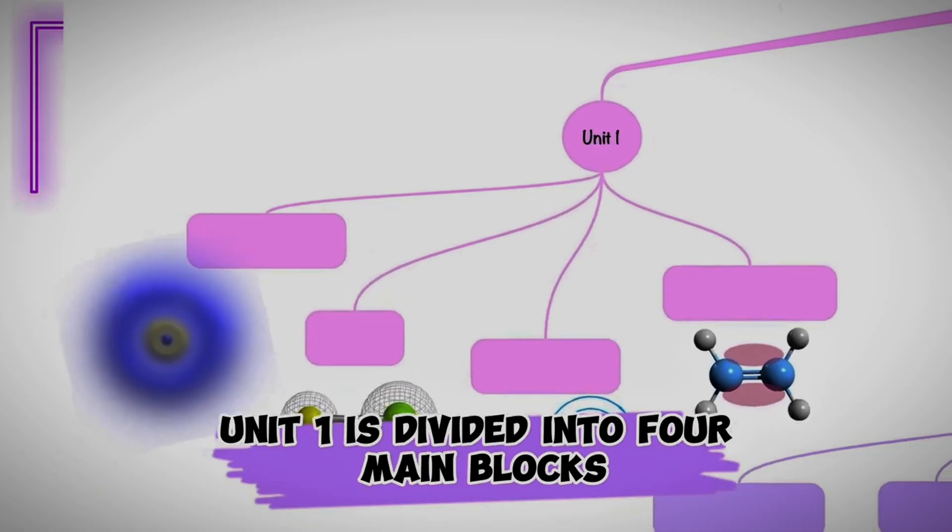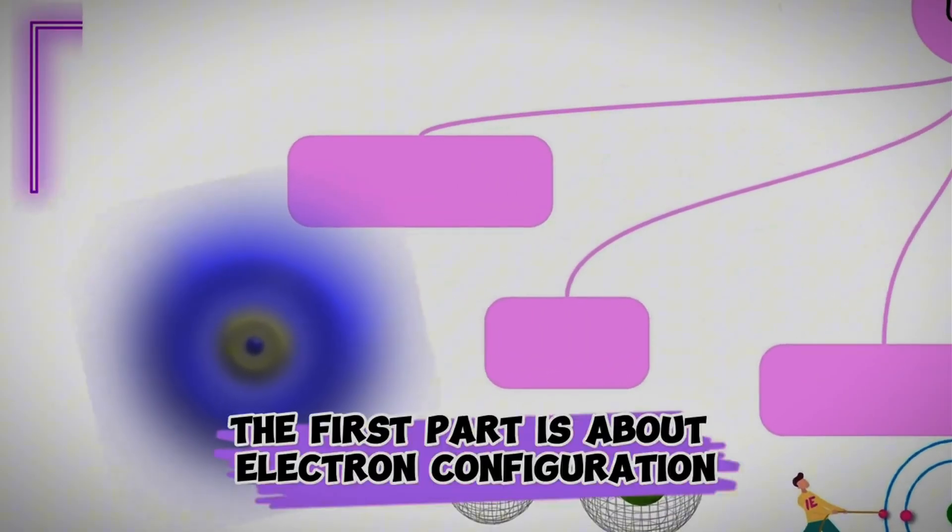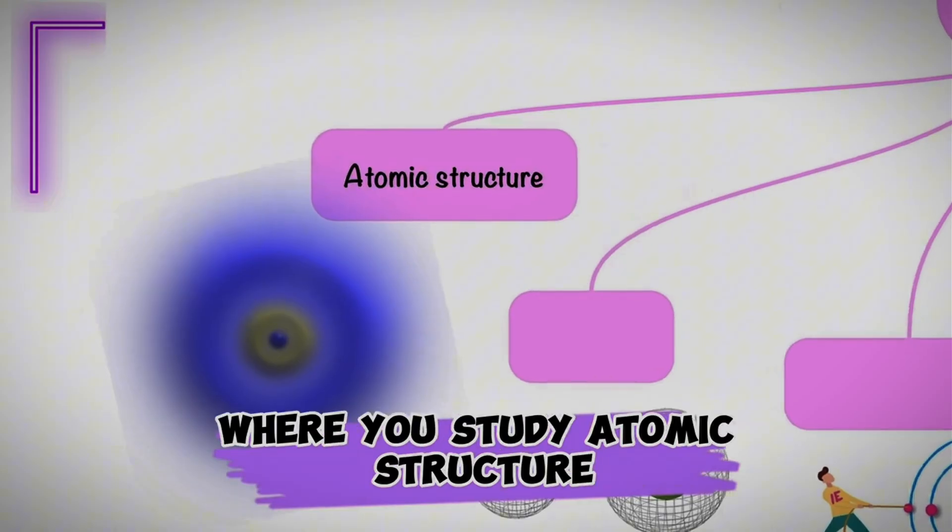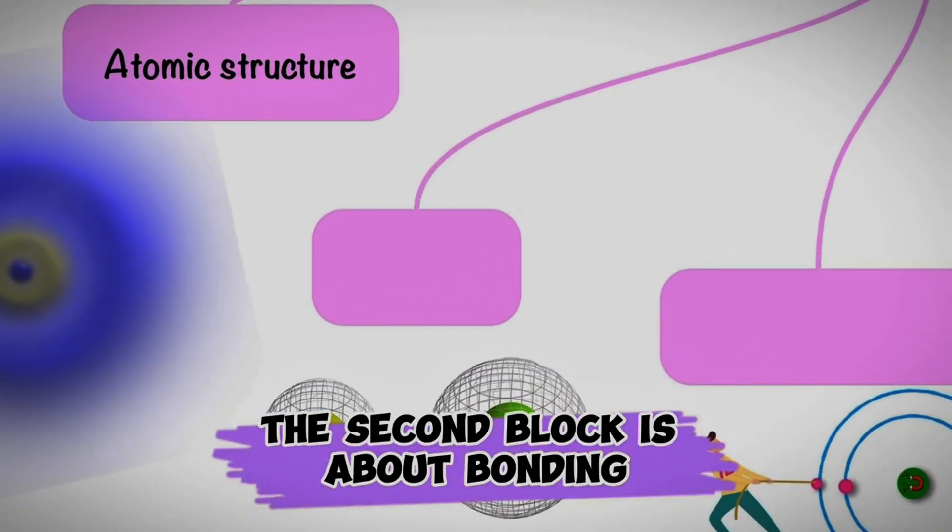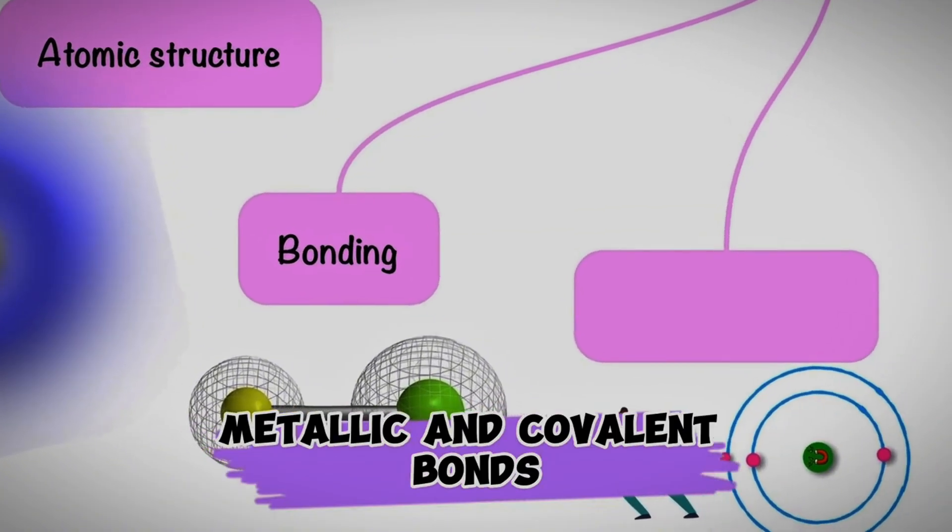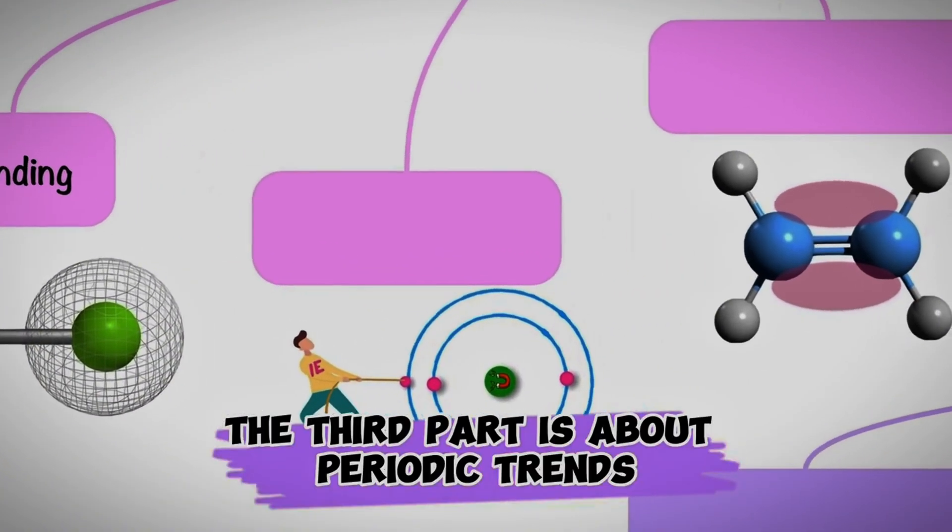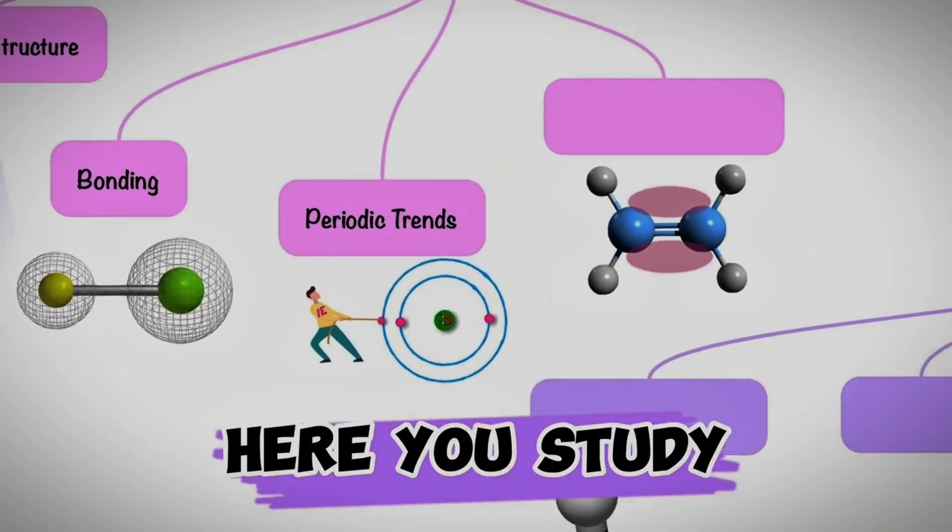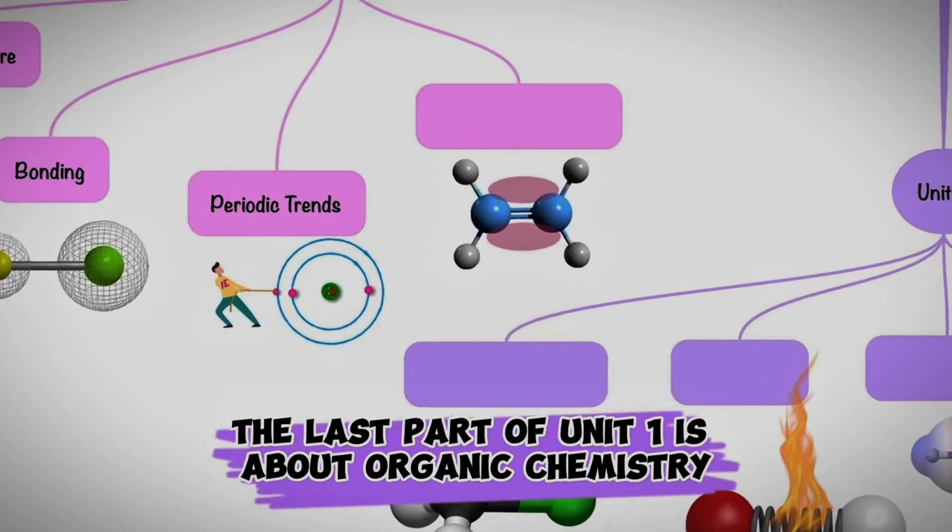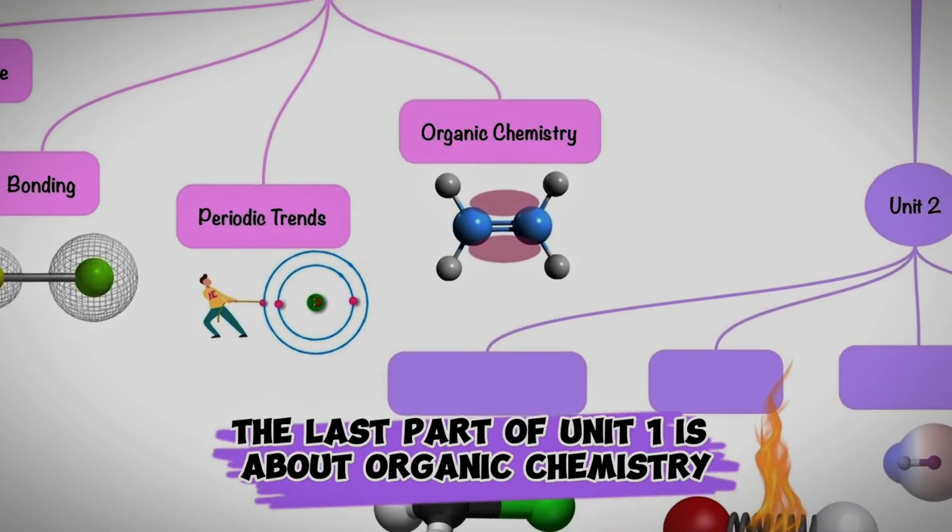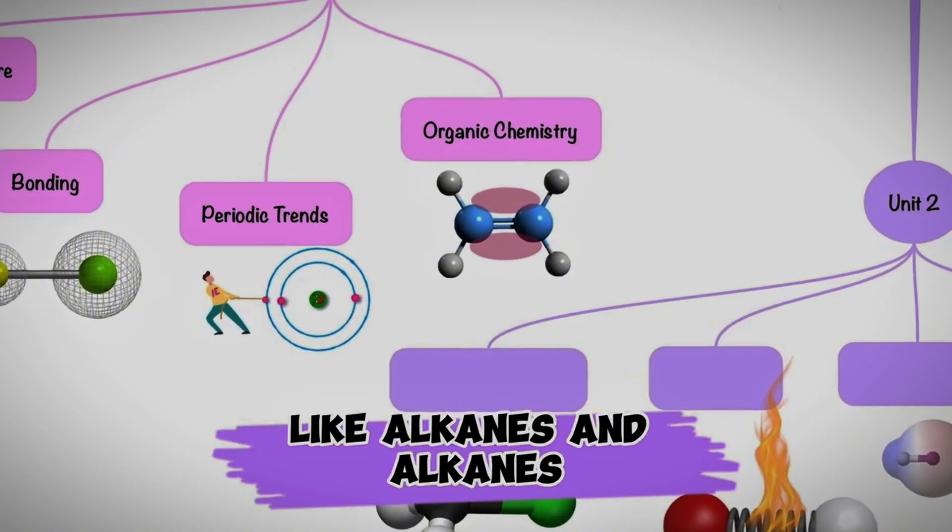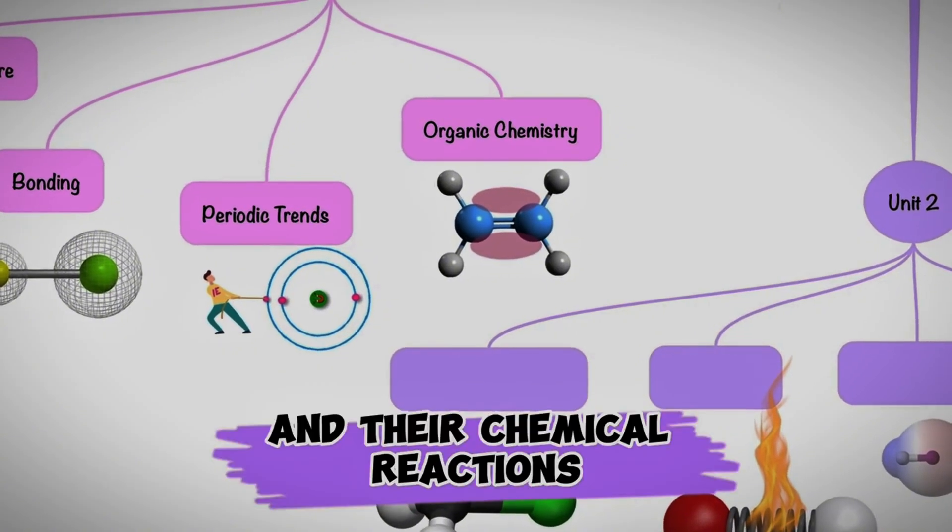Unit 1 is divided into four main blocks. The first part is about electron configuration, where you study atomic structure. The second block is about bonding, where you study ionic, metallic, and covalent bonds. The third part is about periodic trends. Here you study how properties change along the periodic table. The last part of unit 1 is about organic chemistry. Here you study hydrocarbons like alkanes and alkenes and their chemical reactions.